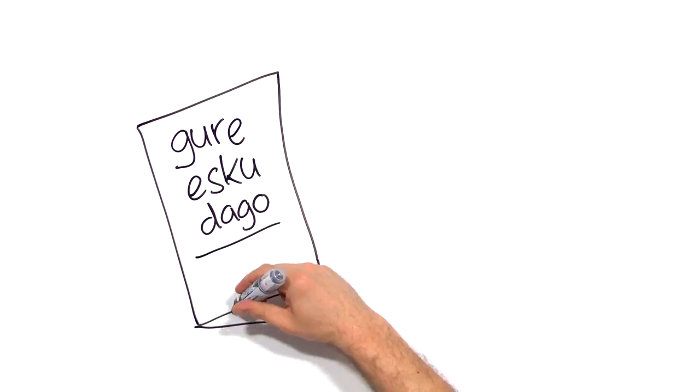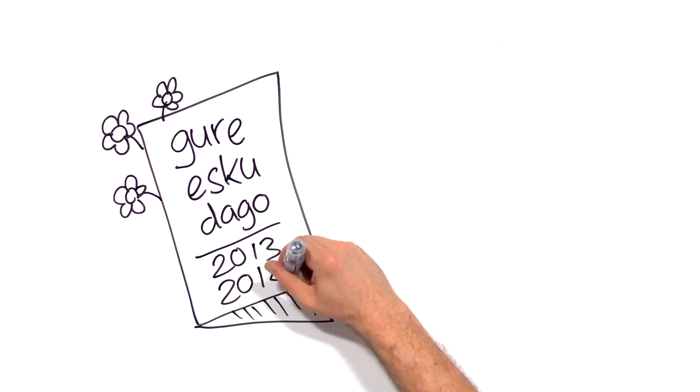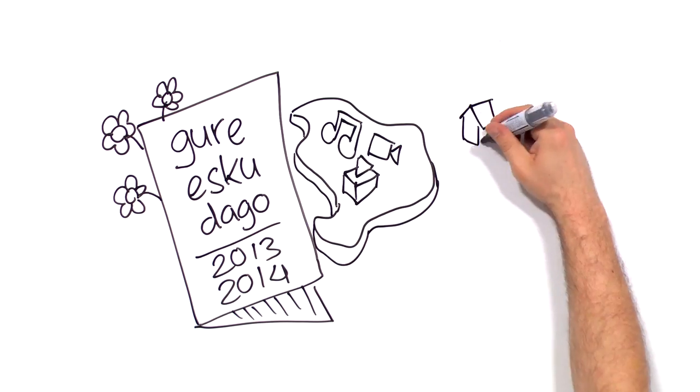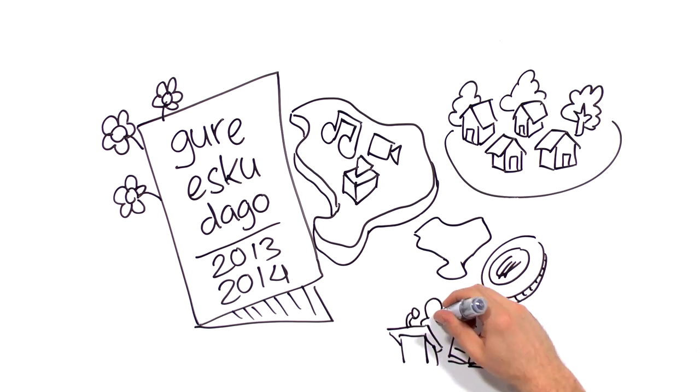Gure Esku Dago presents a plan of action for 2013-2014. A plan of action with a set of initiatives at the national level, which complement and aid initiatives that are going to be developed collectively throughout the country.